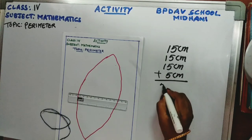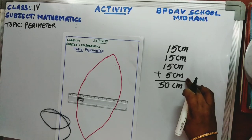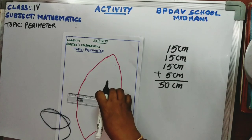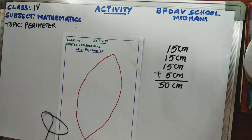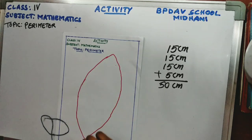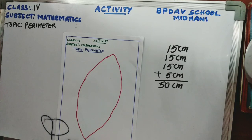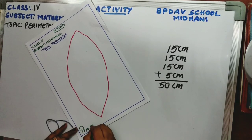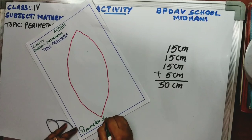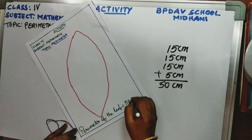And the remaining section is 5 centimeters. Now add them all: 15 + 15 + 15 + 5 = 50 centimeters. The perimeter of the leaf is equal to 50 centimeters. The perimeter means the length of the boundary of the leaf, which we have measured.